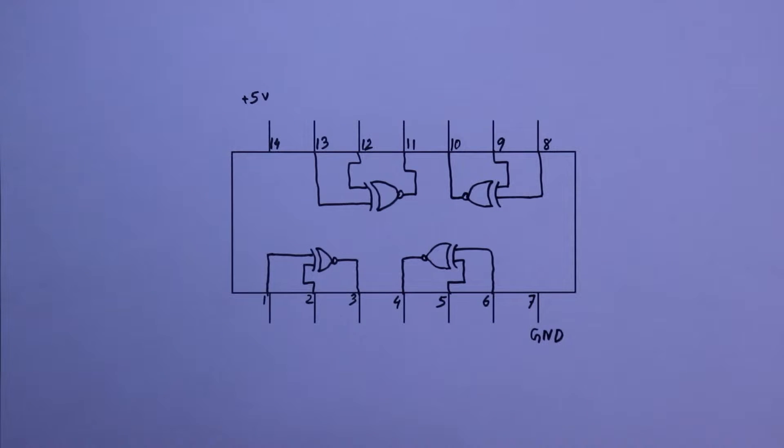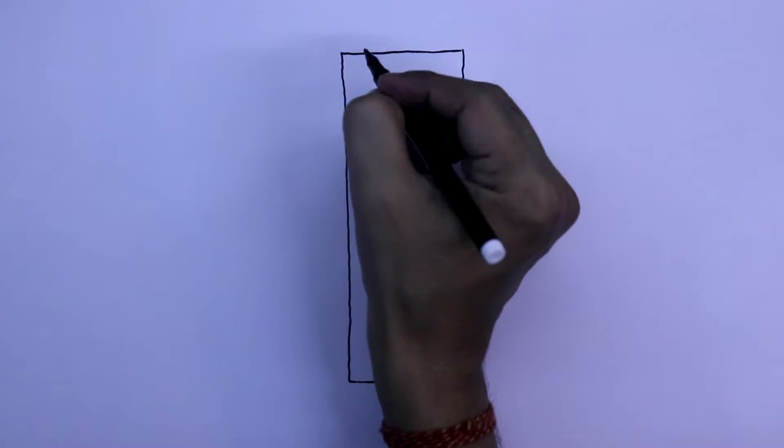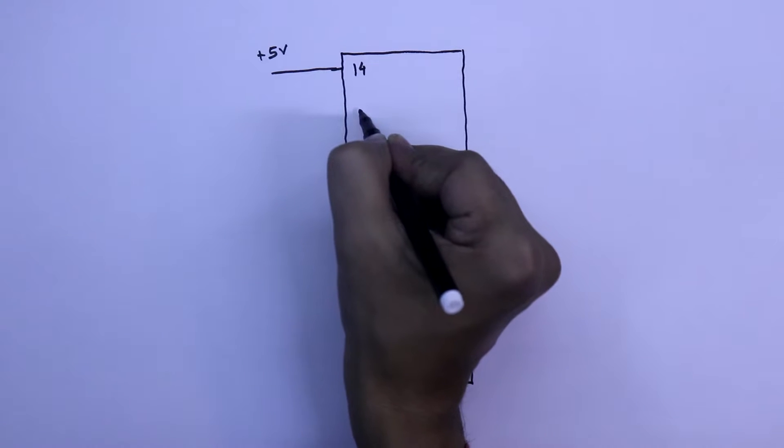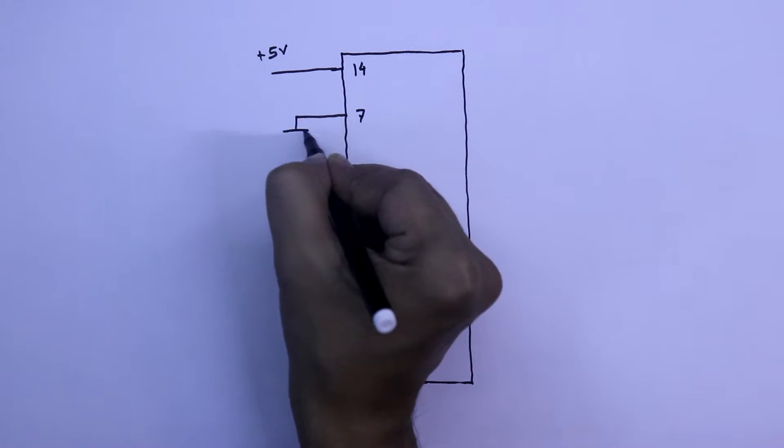For the practical, we will use gate number 1. The two inputs are pin number 1 and 2, and the output is pin 3. Now we will see the practical circuit. Here is our IC. With pin number 14, we will connect plus 5V, and with pin number 7, we will connect it to the ground.